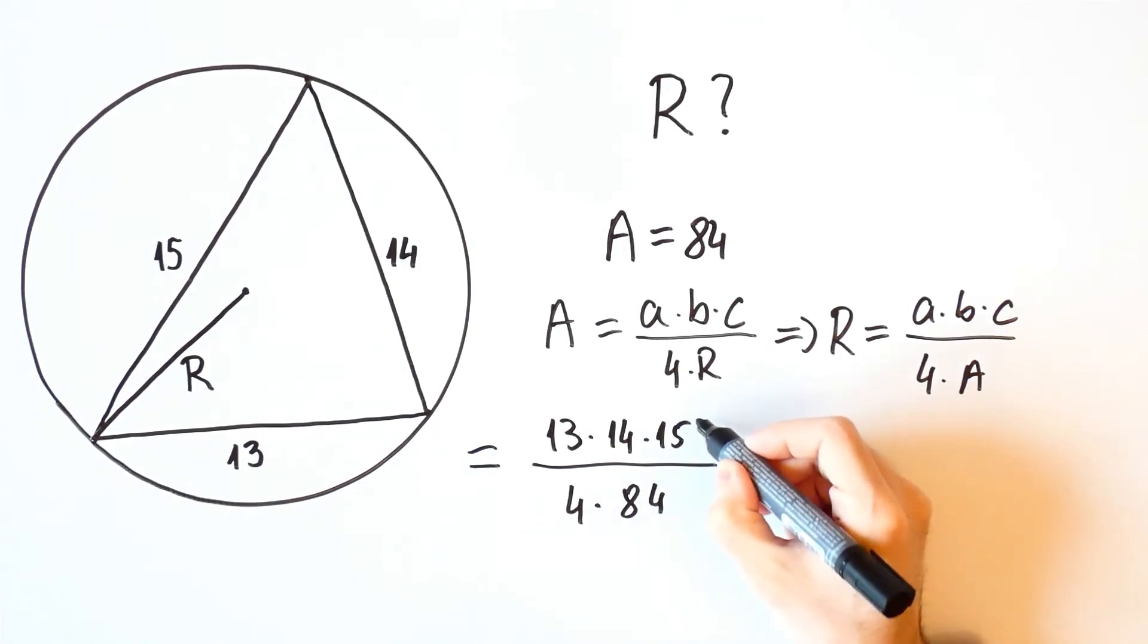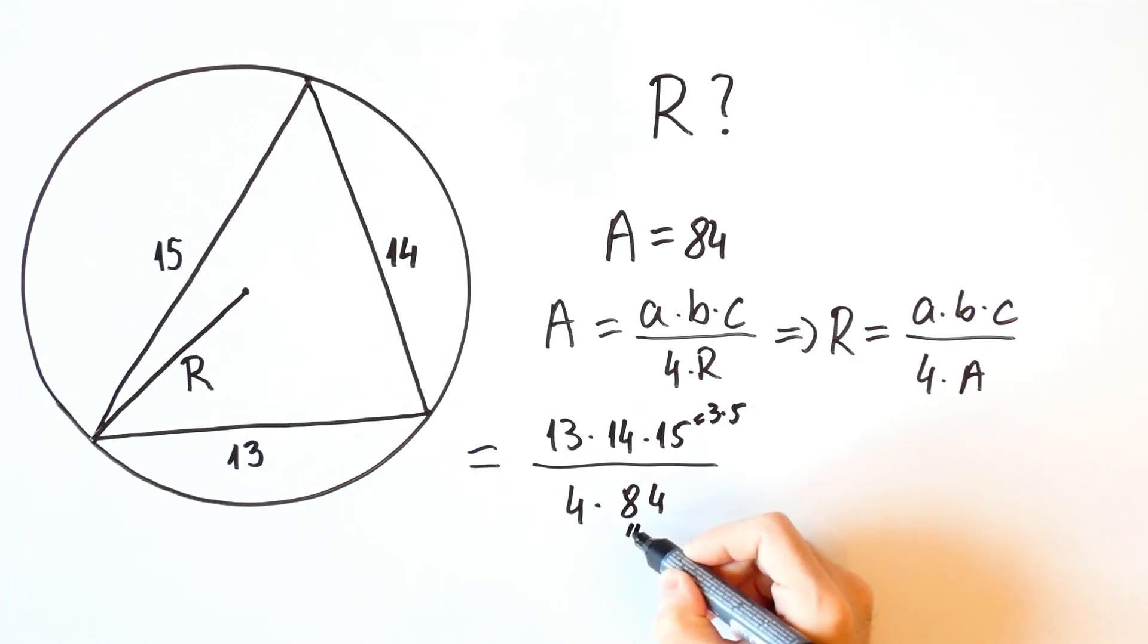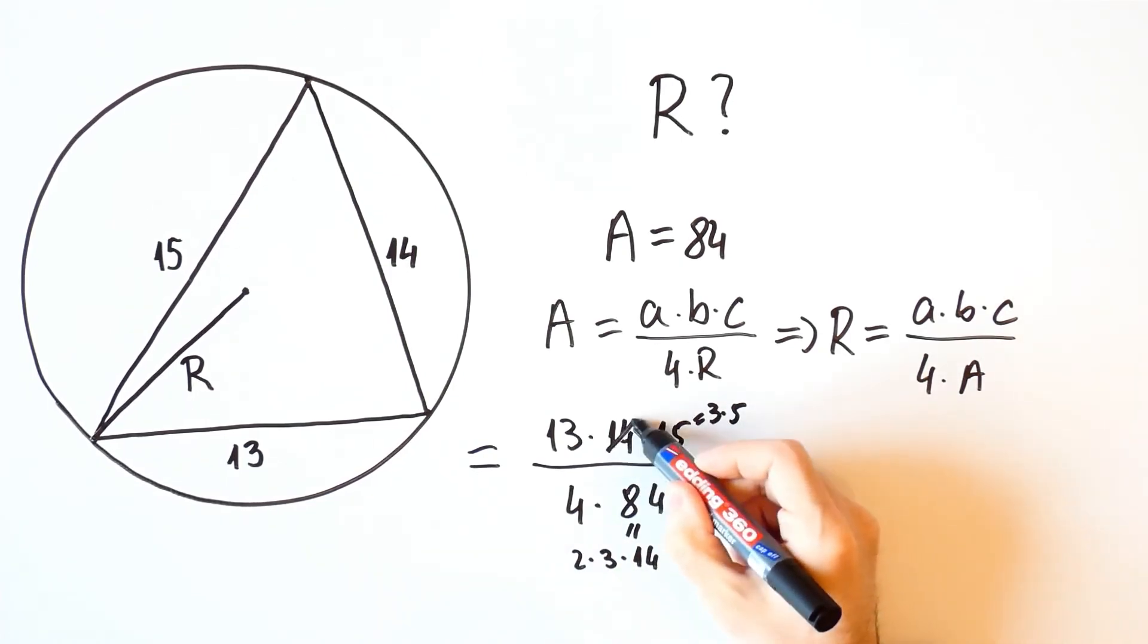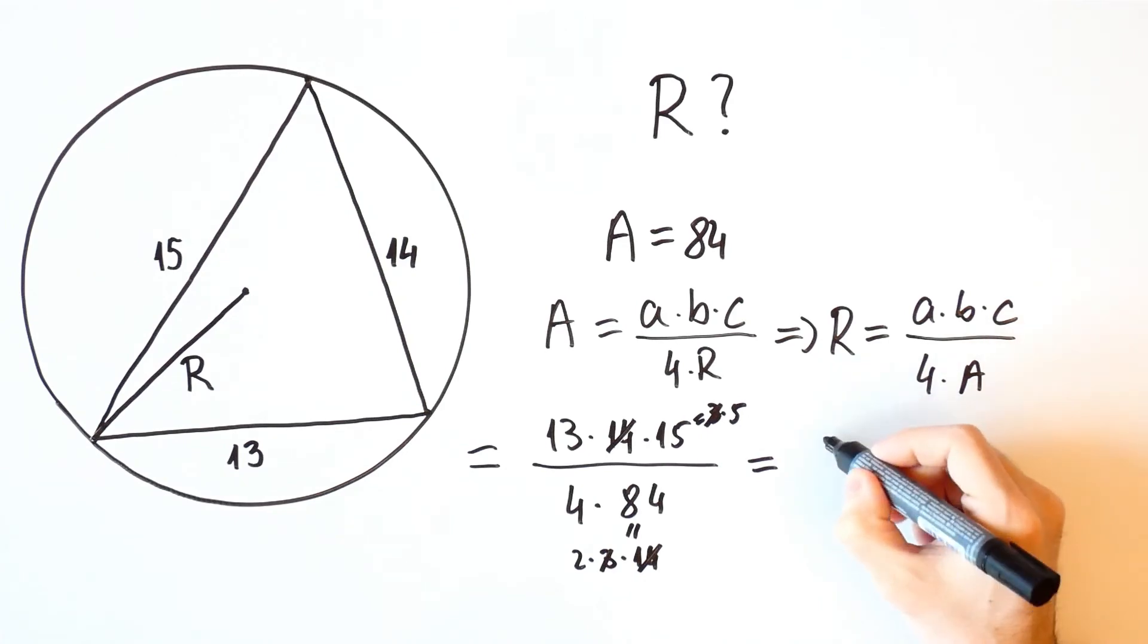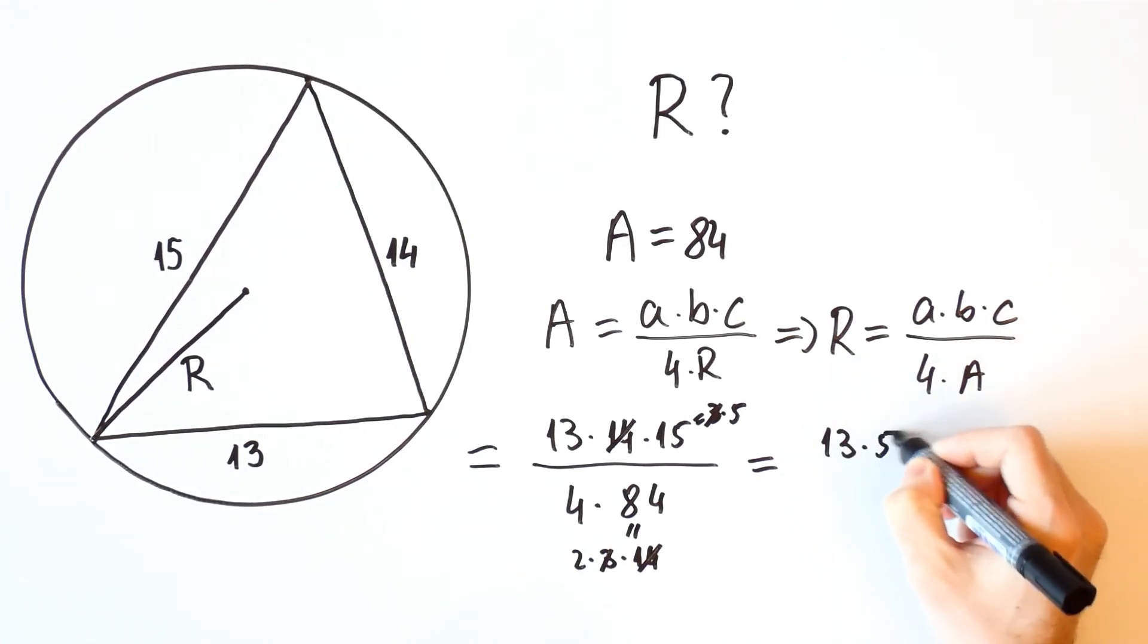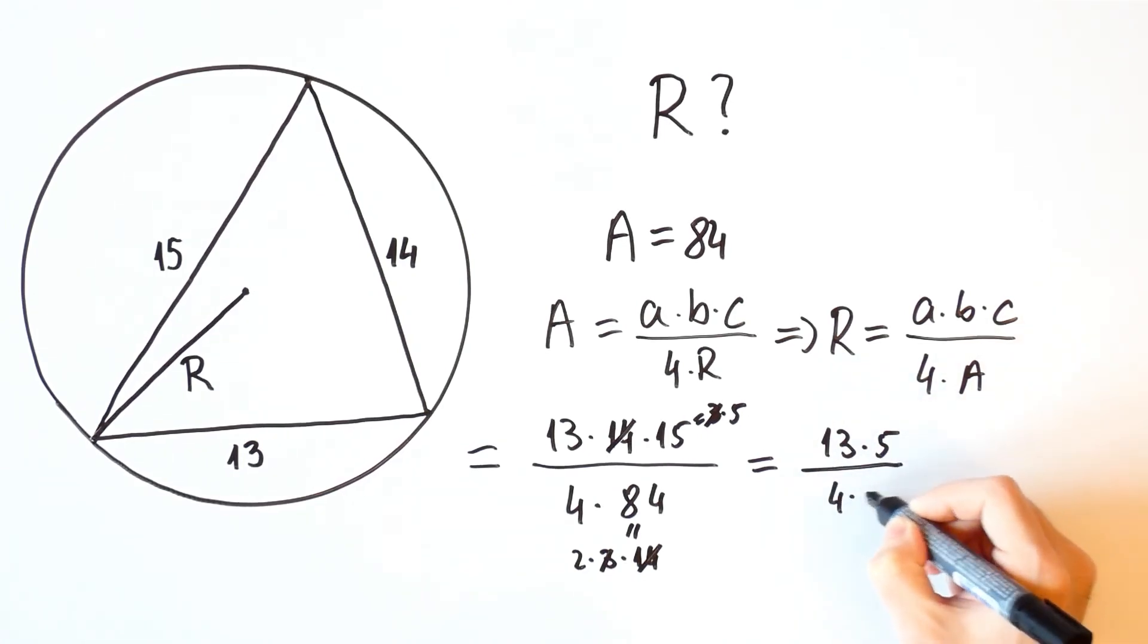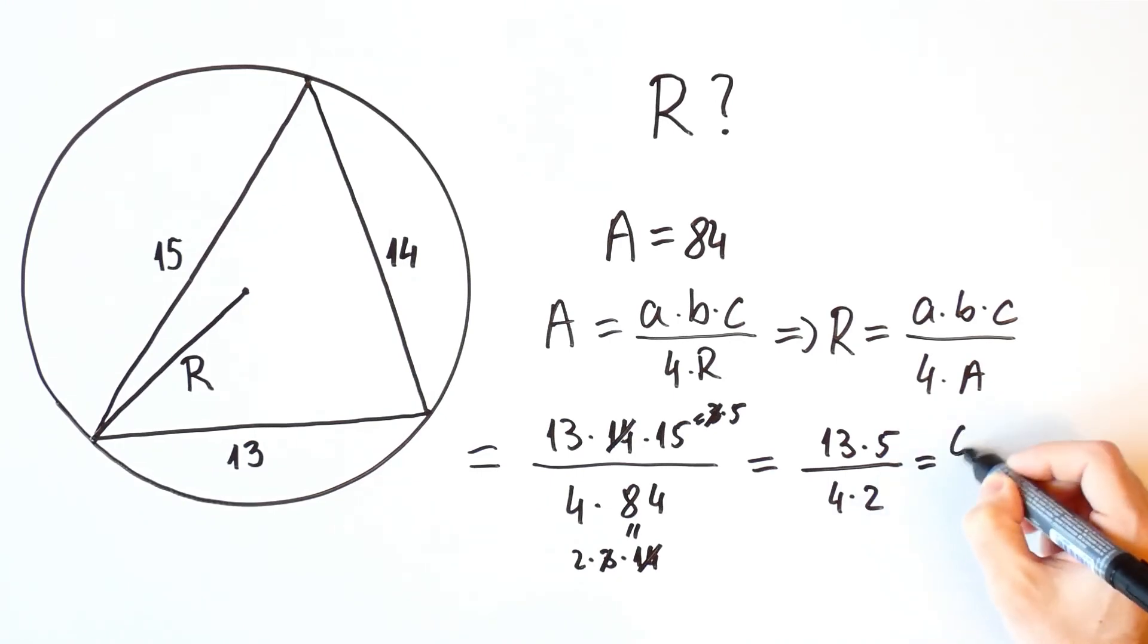But 15 is equal to 3 times 5 and 84 is equal to 2 times 3 times 14. So, 14 and 14 cancel out, 3 and 3 cancel out, which means this is equal to 13 times 5 over 4 times 2, which is equal to 65 over 8, and that is equal to 8.125.